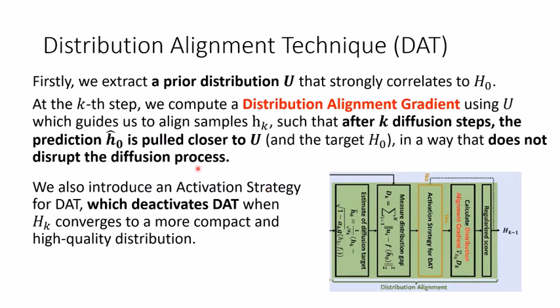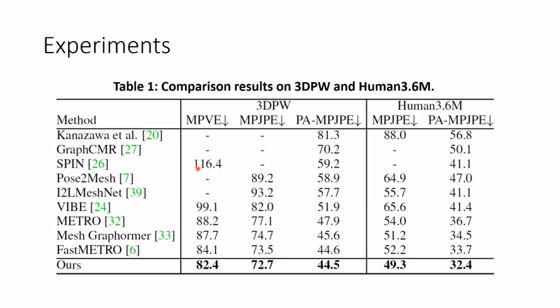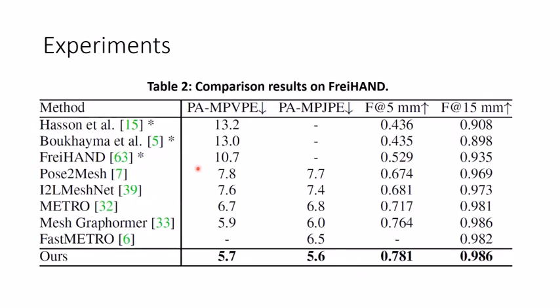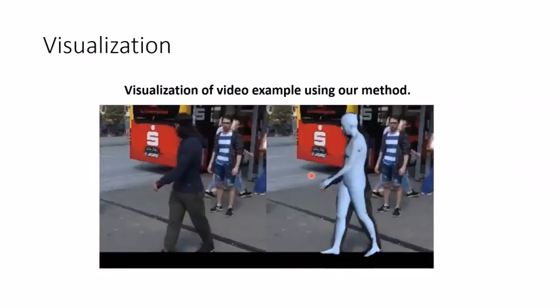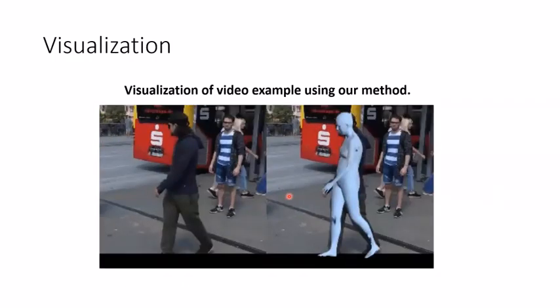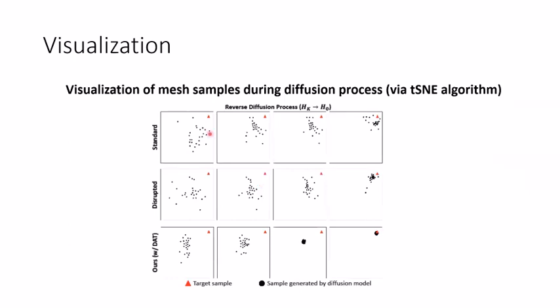Please refer to the paper for the details. In our experiments, we find that our proposed method provides good accuracy for HMR on the 3DPW and Human3.6M datasets. We also evaluate our method on the FreiHAND dataset for human hand meshes, and we also perform well there. We visualize the output using our method and find that it effectively recovers the mesh even under ambiguity and produces high-quality mesh results. We also visualize our method applied to a video, where we also produce high-quality results. Lastly, we observe that our method with DAT converges quickly and smoothly towards the target as compared to other baselines.